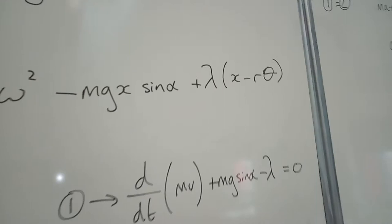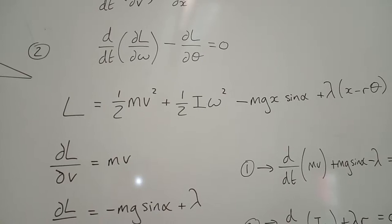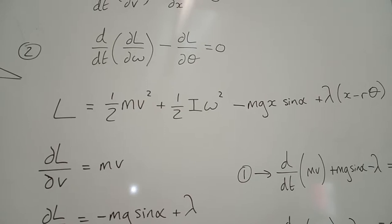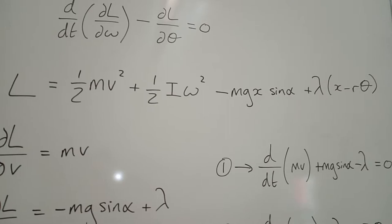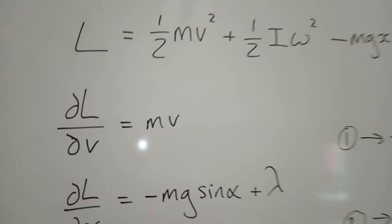Based on that equation there, in the middle of the screen, the big long one, del L by del V, I treat everything except V as a constant. I don't get omega in terms of V, and X in terms of V. I don't do that. I keep everything other than V constant. So I get a very simple MV.